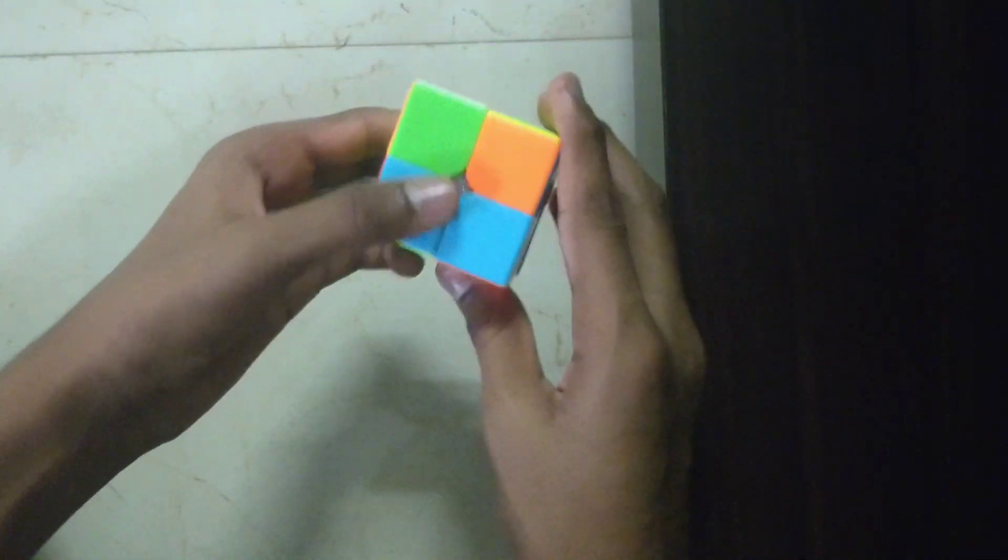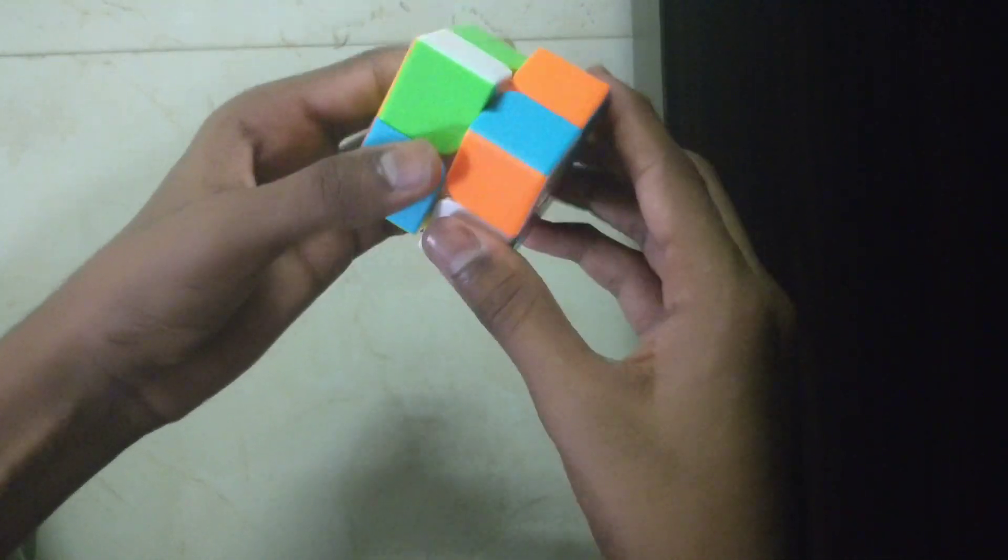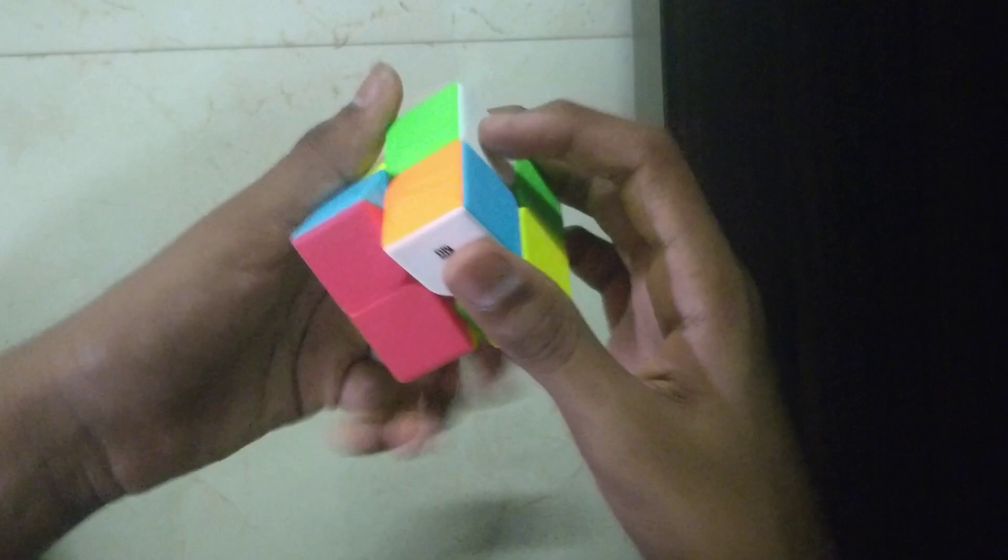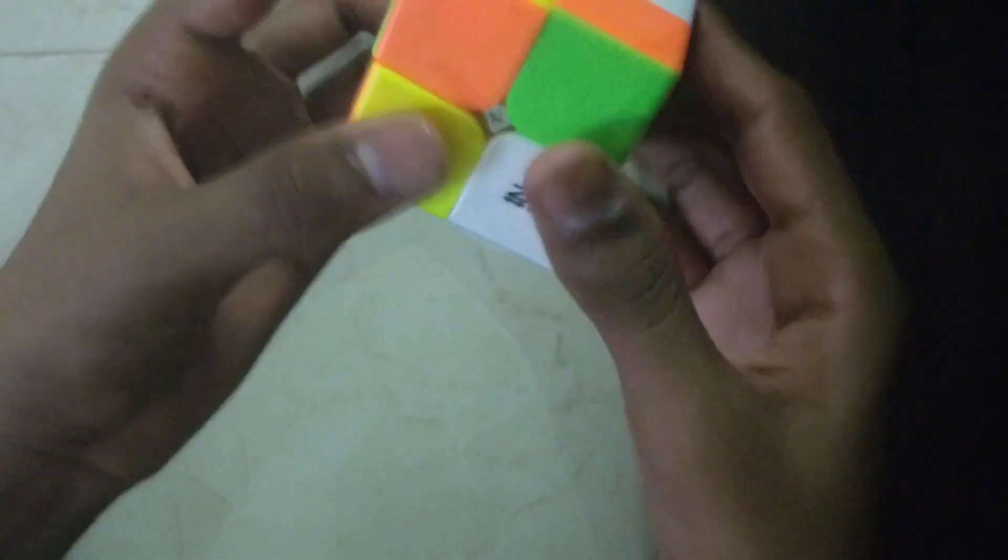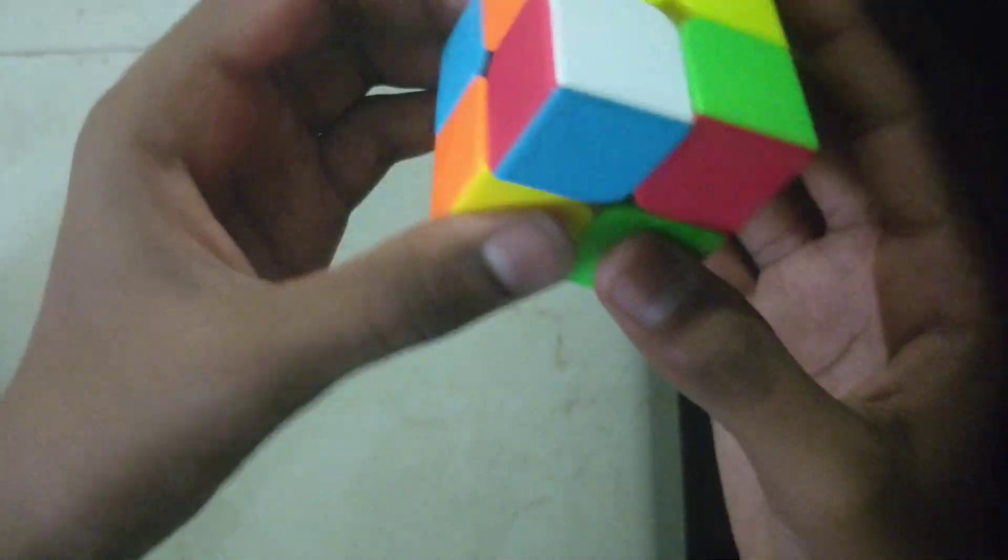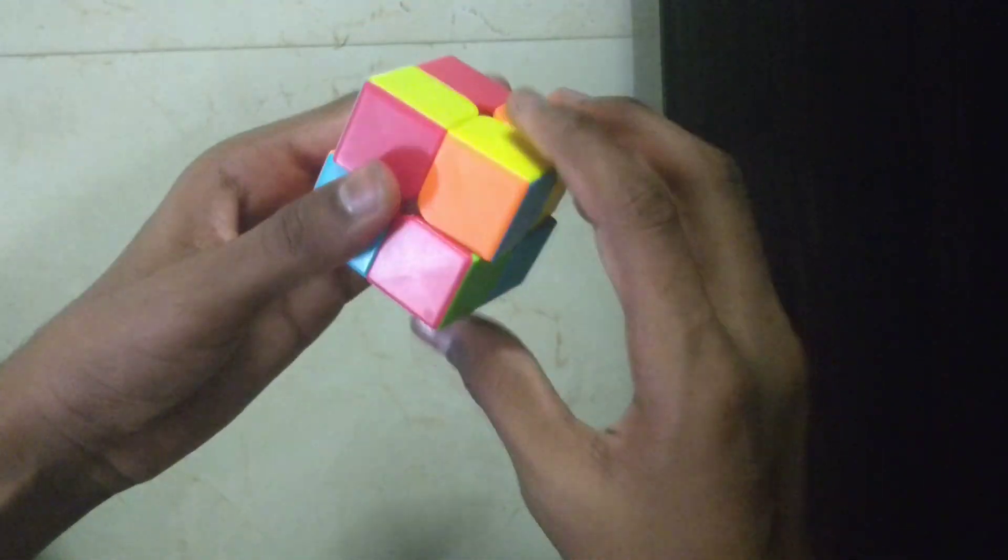So now use the regular 3x3 formula. This is the formula. Now keep it and do this again and again. So the bottom colors are not matched. So do that again.